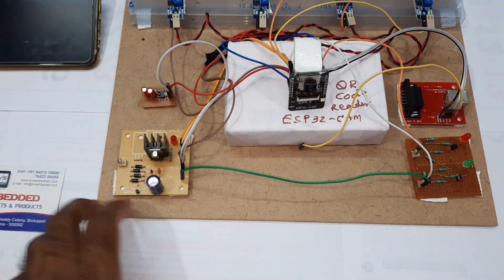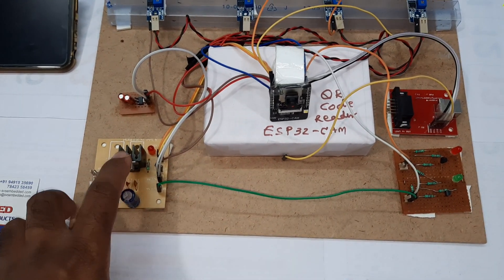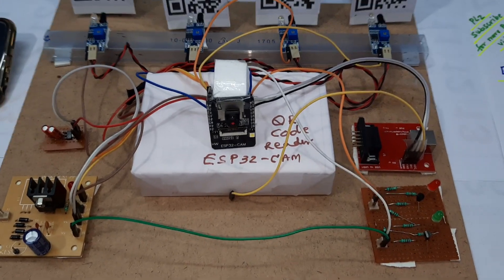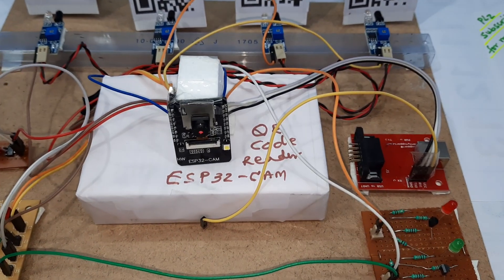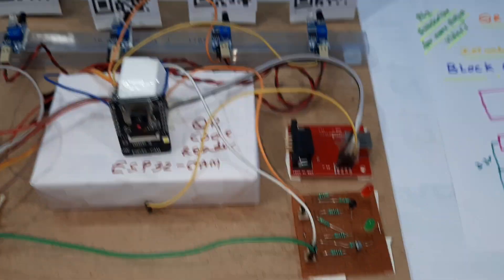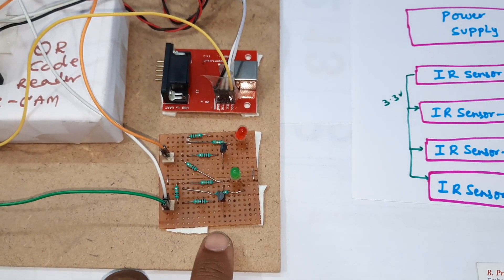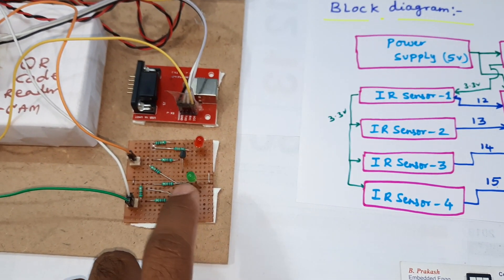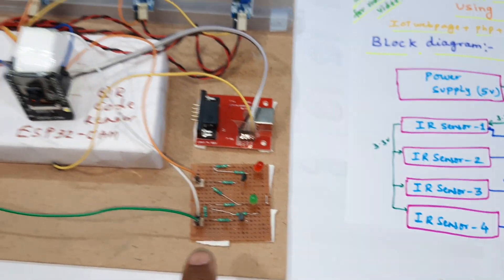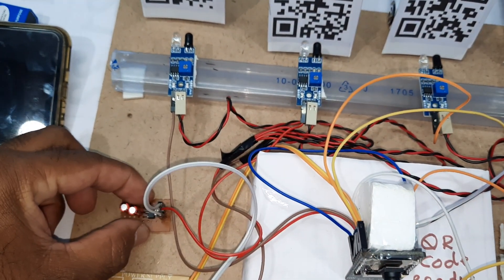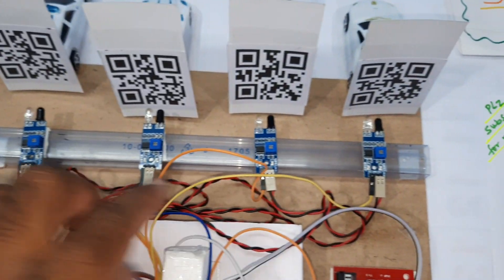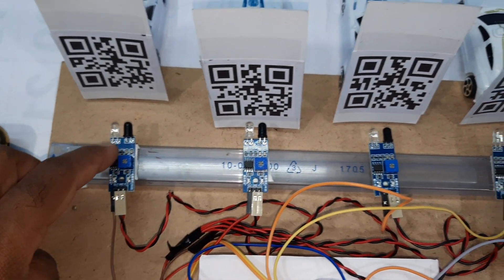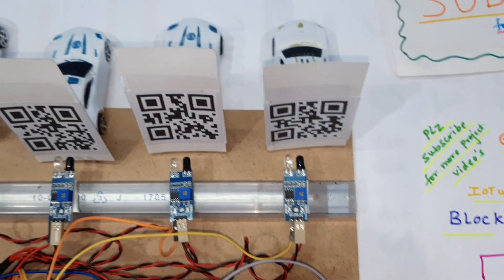For the hardware part, we are using a 5V power supply module with a bridge rectifier, filter capacitor, 7805 regulator, and one indicator LED. We also have the ESP32 camera module, one red LED, one green LED, a transistor to switch the LED on and off, and a 3.3V power supply module for the IR sensors. These are IR transmitter-receiver pair sensors: sensor 1, sensor 2, sensor 3, sensor 4.